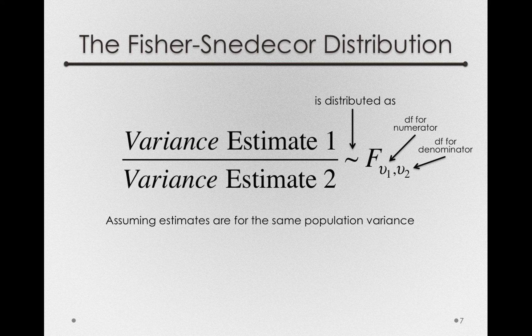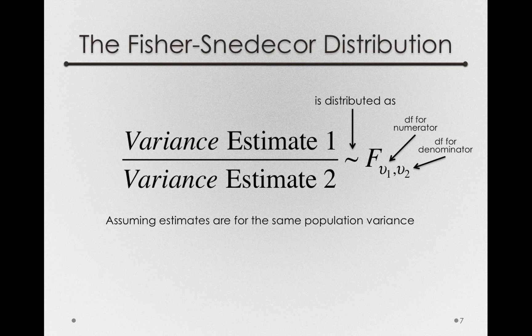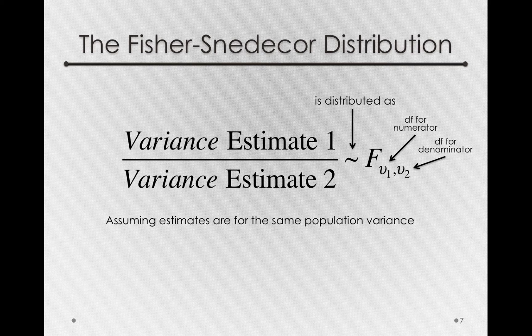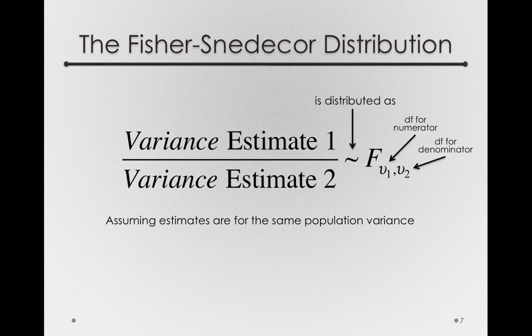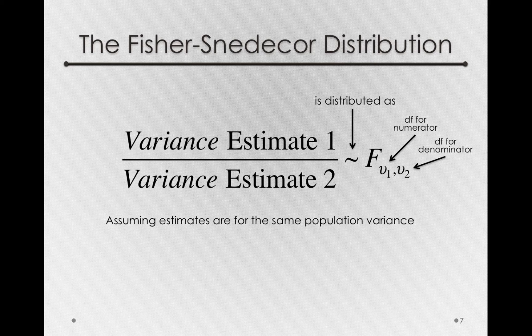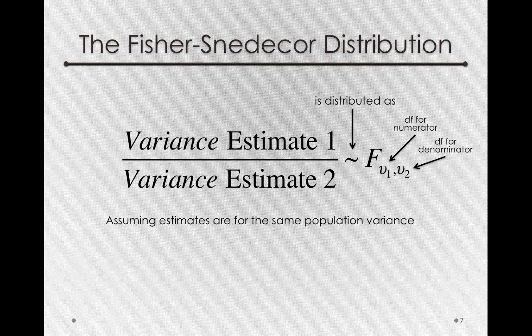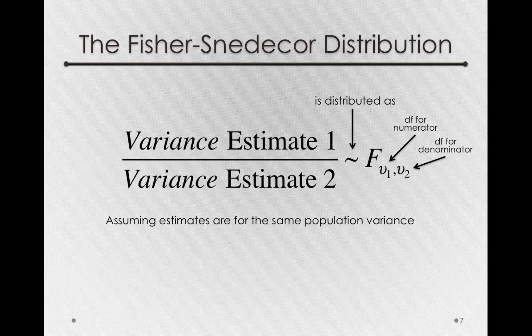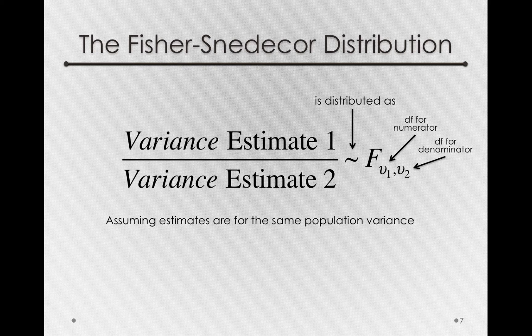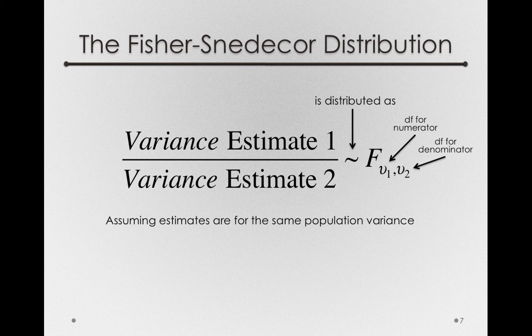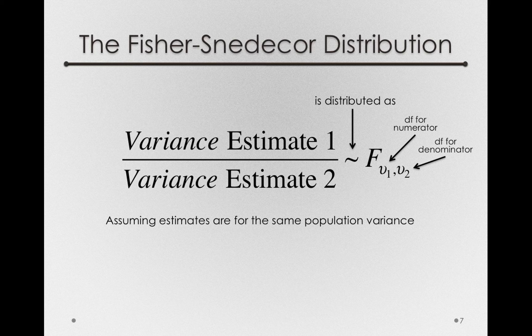Remember when we were estimating variances from simple samples, we had degrees of freedom in the denominator when we took the sums of squares divided by the n-1. n-1 is simply the degrees of freedom, the number of independent pieces of information that are used in that variance estimate. So the degrees of freedom for the numerator is simply the number of independent pieces of information that go into the numerator quantity, and the degrees of freedom for the denominator are simply the number of independent pieces of information going into the denominator estimate.